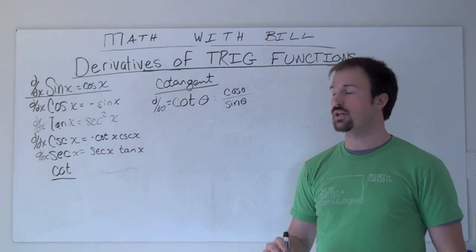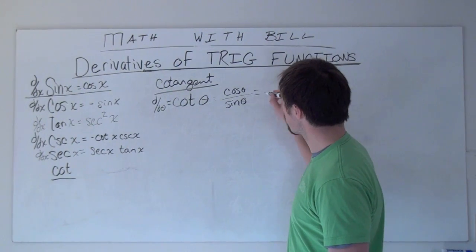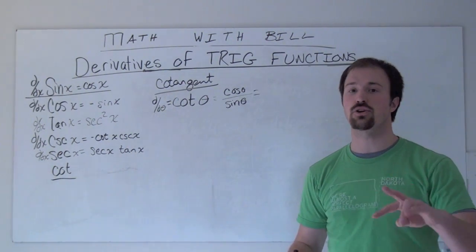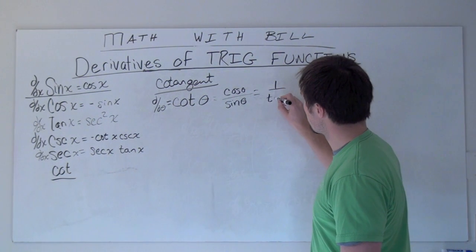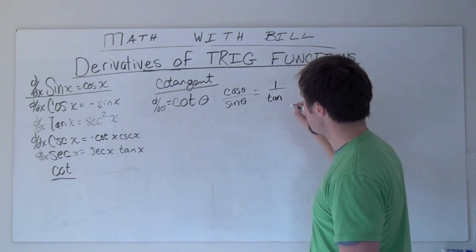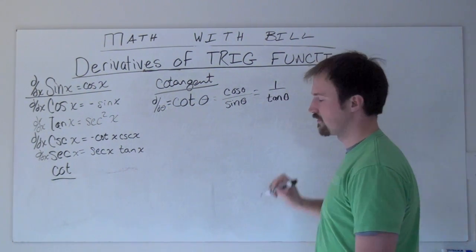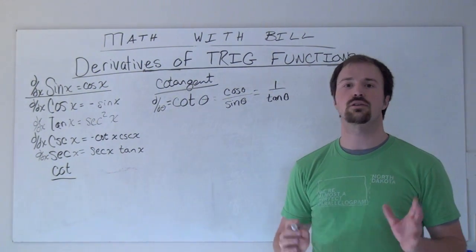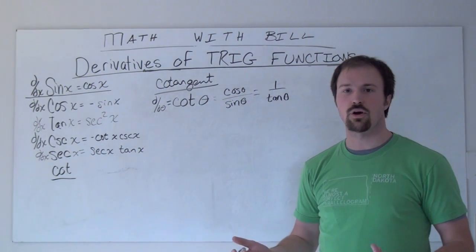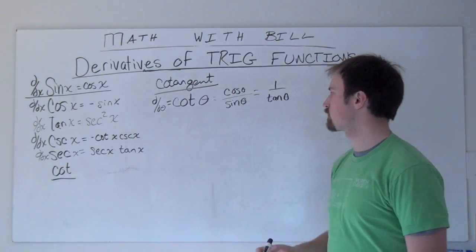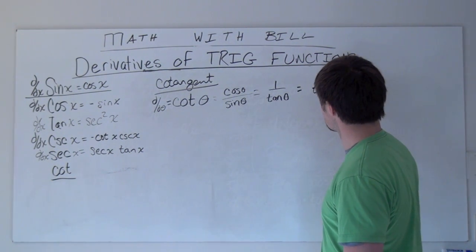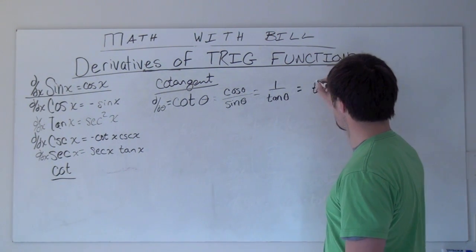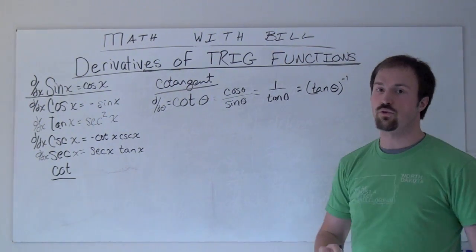and that's by using our other identity, the reciprocal identity, for cotangent, which is 1 divided by tangent of theta. This one's going to be a little bit quicker, a few less steps. If you want to do it the other way, go for it. But I've got 1 divided by tangent, which is the same thing as tangent theta to the negative 1 power.